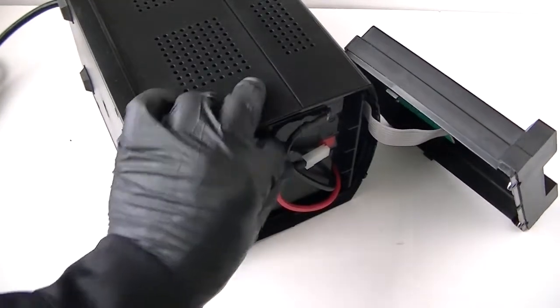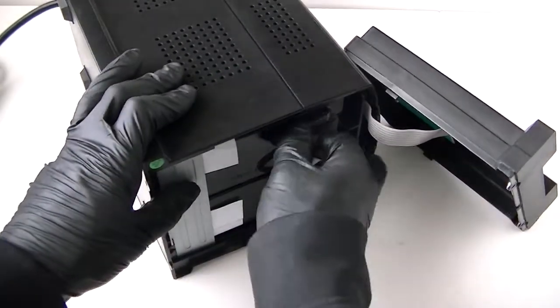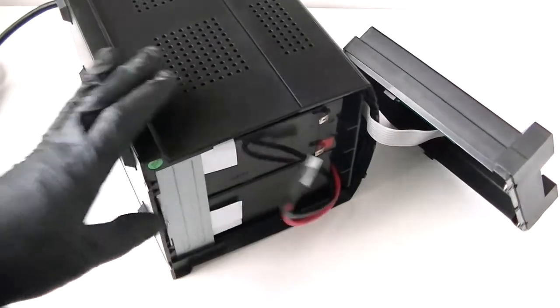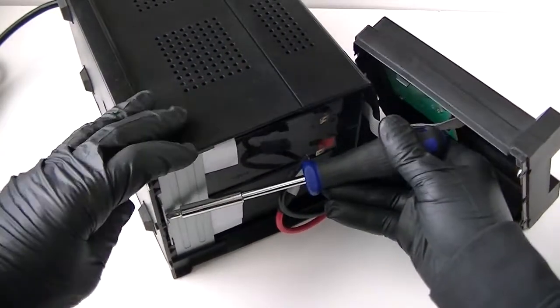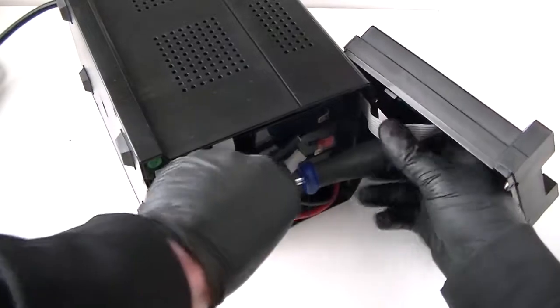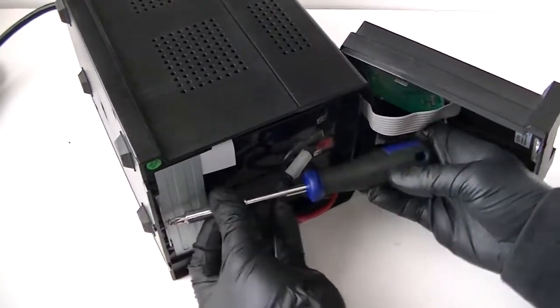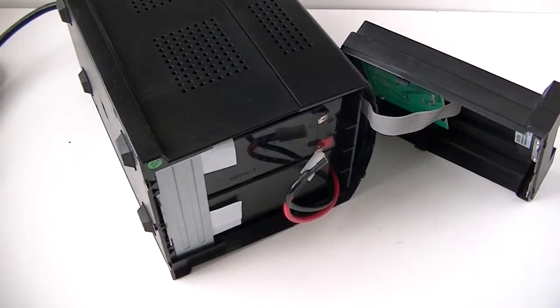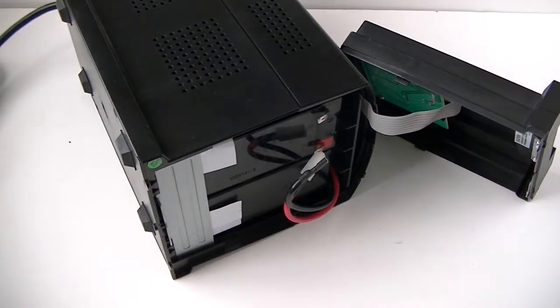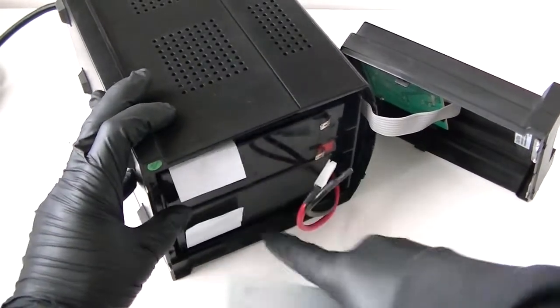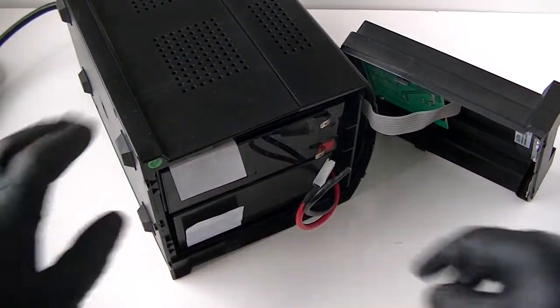First you're going to disconnect the cable, positive and negative right here. Remove that. Now there's going to be one screw here to remove the clip. And remove the front of the clip right here. The secure clip holds the battery in here. And remove the batteries.